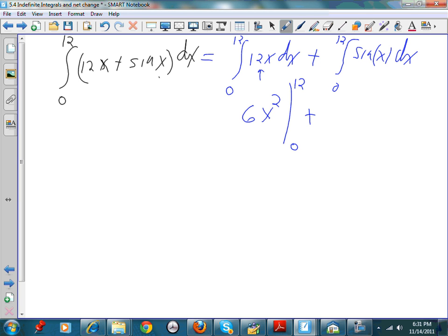I'm going to evaluate that at 12 and 0 plus, well, how do I get a sine of x? Well, I know it's the cosine. I think about the derivative of the cosine. Well, that's the negative sine. Wait a minute. I need a negative here. Negative cosine from 12 to 0.